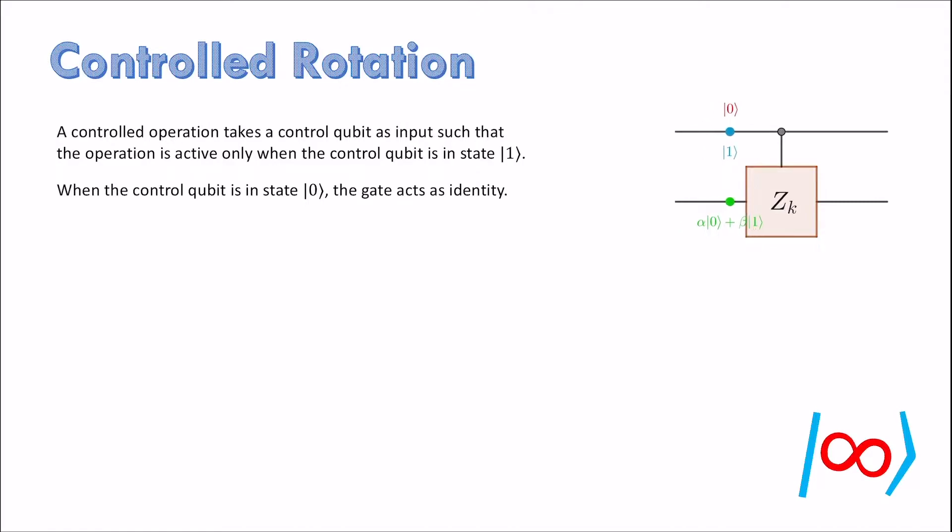In case of controlled rotation Z_k, it can be expressed as follows. Here the state c acts as control. The phase that the state 1 picks is non-trivial only when c is 1.